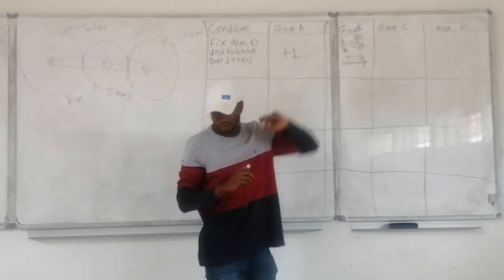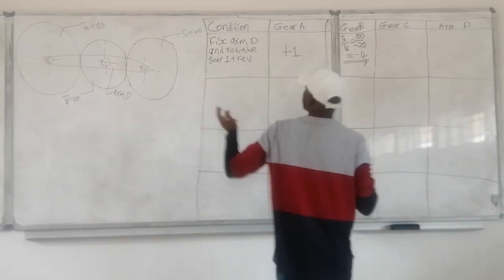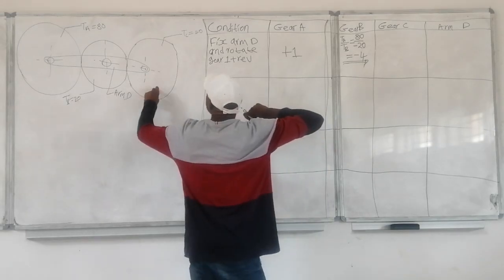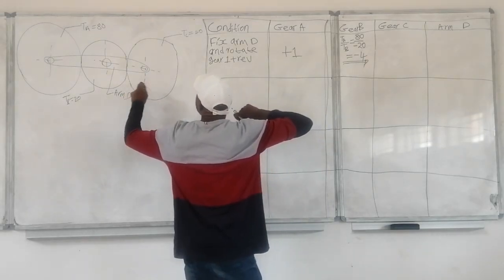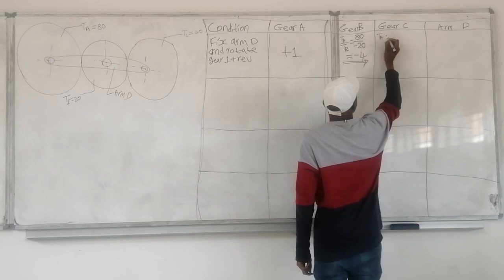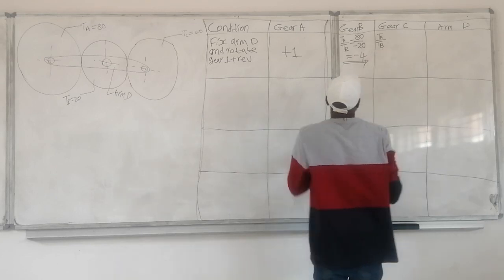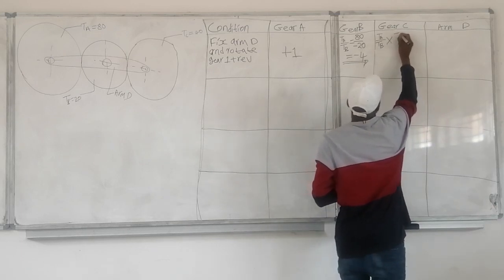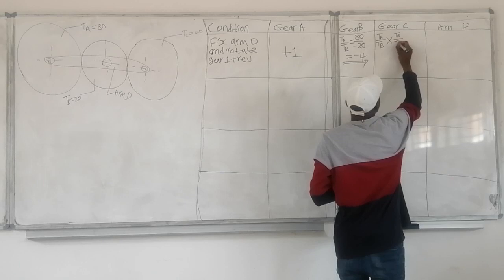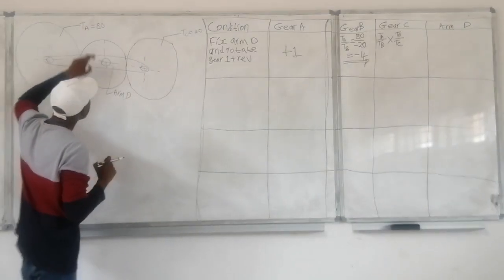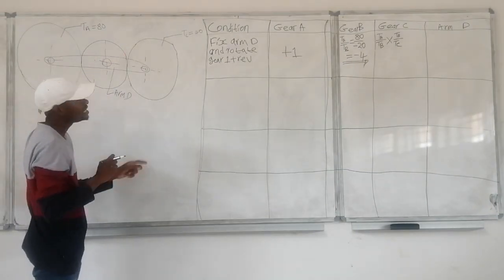Now we come to gear C. When we come to gear C, we are going to use the very same procedure, but this time we are going to include gear C. We are going to take the number of teeth of gear A over number of teeth of gear B, and this is called gear ratios. This is going to be multiplied by number of teeth of gear B over number of teeth of gear C. When we rotate gear A clockwise, gear B turns anti-clockwise and gear C turns clockwise.